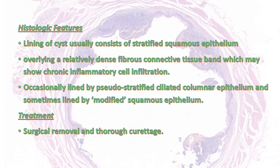Histological features: the lining of the cyst usually consists of stratified squamous epithelium overlying a relatively dense fibrous connective tissue band, which may show chronic inflammatory cell infiltration. Occasionally it is lined by pseudostratified ciliated columnar epithelium, and sometimes by modified squamous epithelium. Treatment usually involves surgical removal and thorough curettage.